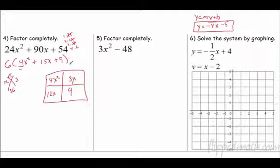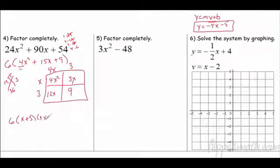Greatest common factor going this way is 3. Greatest common factor going this way is 4x. Greatest common factor going this way is 3. Greatest common factor going this way is x. So, don't forget our greatest common factor at the beginning. 6 times x plus 3 times 4x plus 3.